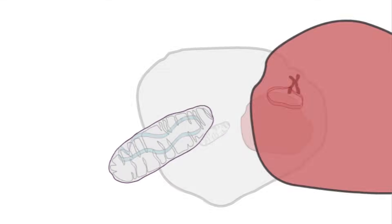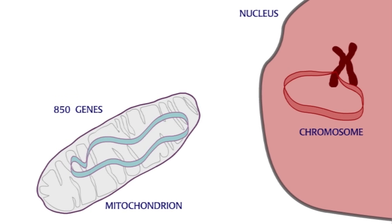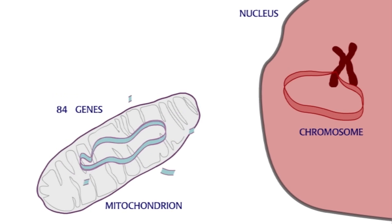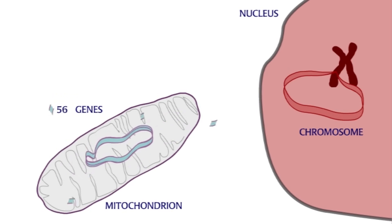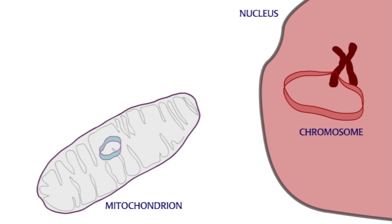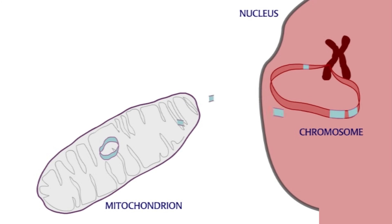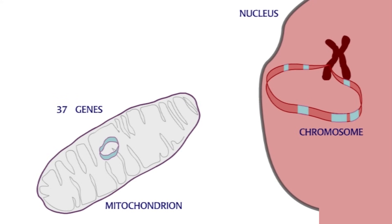The human mitochondrial chromosome has been vastly reduced over time. Genes for functions that could be provided by the host were lost. Also, some genes needed for respiration were transferred to the nucleus. Millions of years of evolution have resulted in small mitochondrial chromosomes.